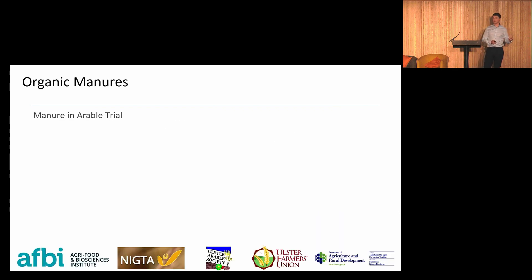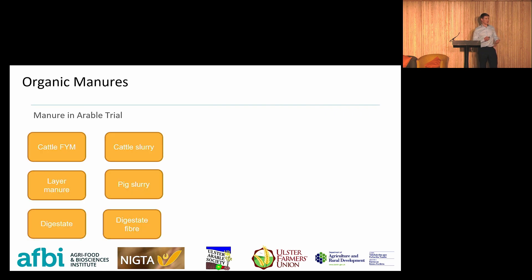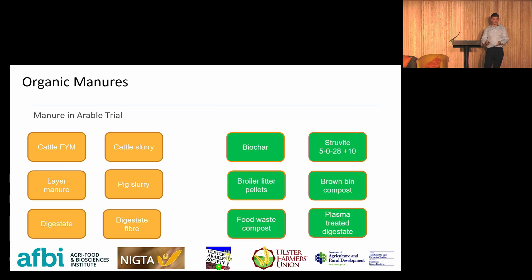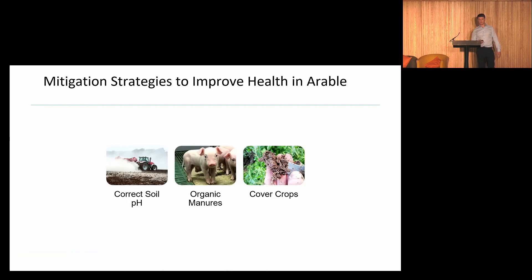The findings from this trial then went on to inform the Manure and Arable trial — a three-year trial in its concluding stage — where we integrated many more organic manures, some standard and some more novel, including different broiler litter pellets and other treatments.